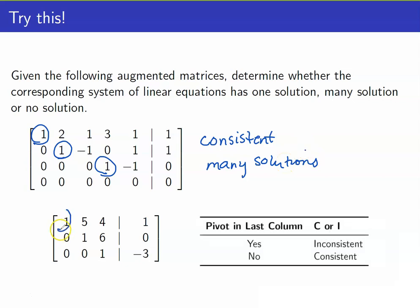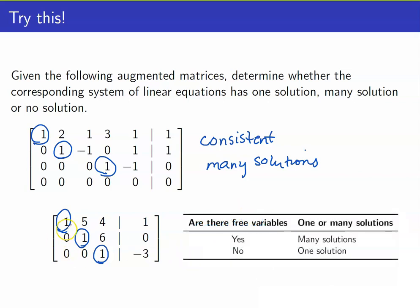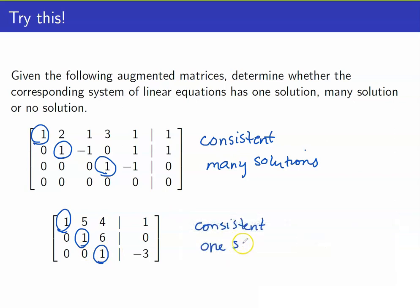For the next matrix, we again look at the leading coefficients. There is no pivot in the last column, so it is consistent. And we have no free variables. Therefore, this system has exactly one solution.